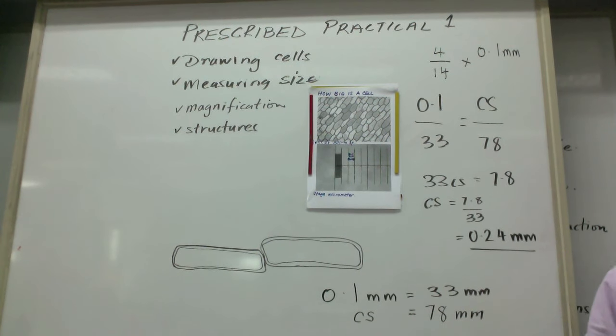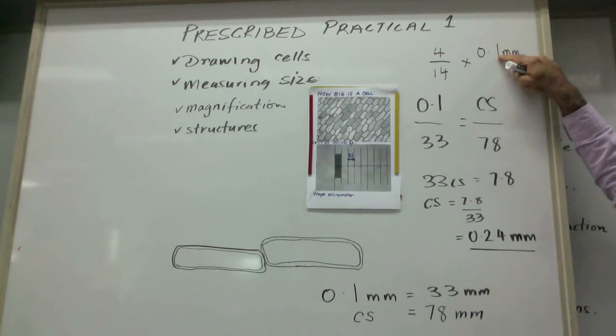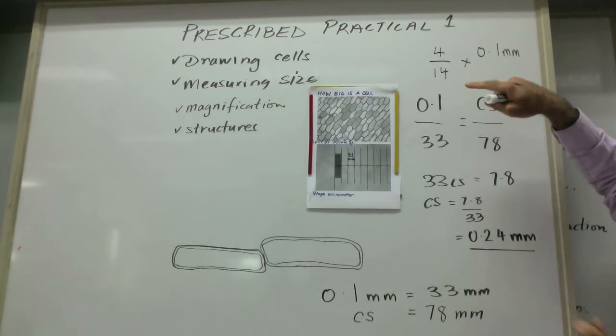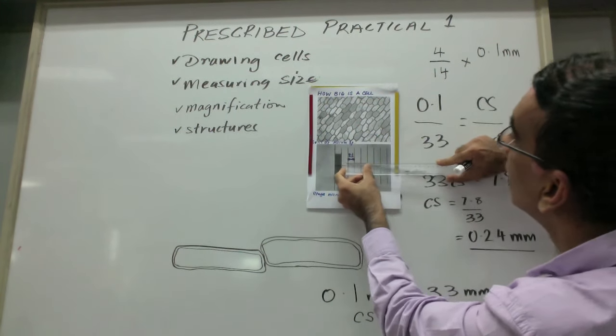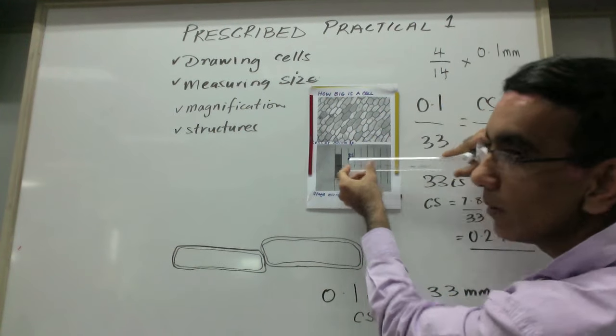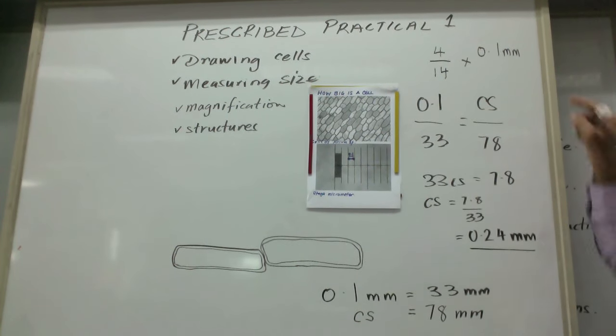So then we say four divided by 14 times point one of a millimeter, and that would give us the size of the nucleus. Because it was four millimeters in size, but point one of a millimeter is represented by what's actually 14 millimeters on the ruler.